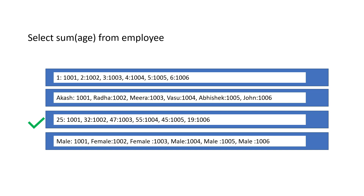Now do you clearly see the difference between row-oriented and column-oriented? It is not that one is universally better than the other — it really depends on the way we want our queries to work. We have to decide the storage format based on how we are going to query our data.